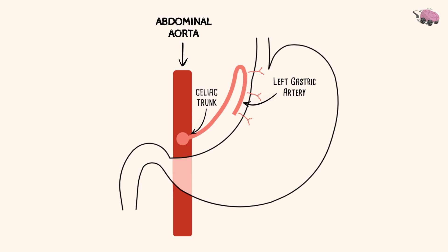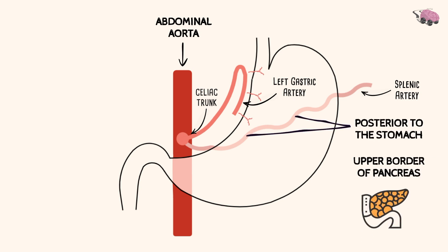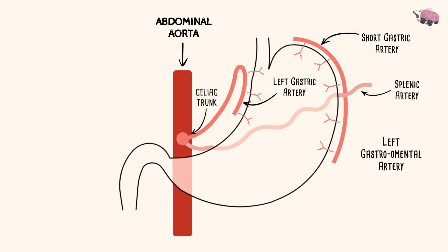The next branch is the largest branch of the celiac trunk — it's the splenic artery. It is a tortuous artery going posterior to the stomach on the upper border of the pancreas. It goes to the spleen and gives off a branch supplying the fundus of the stomach, called the short gastric artery, and a branch going down around the greater curvature called the left gastro-omental artery.